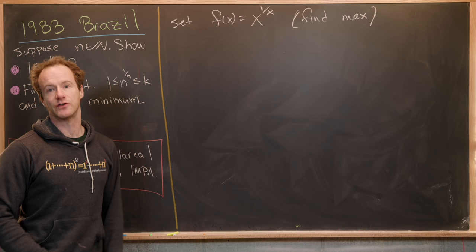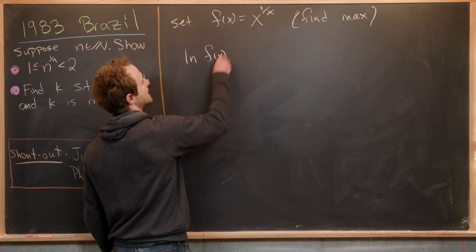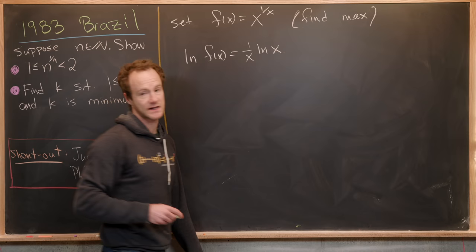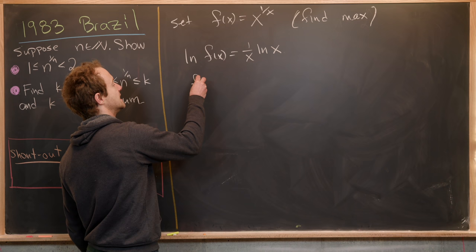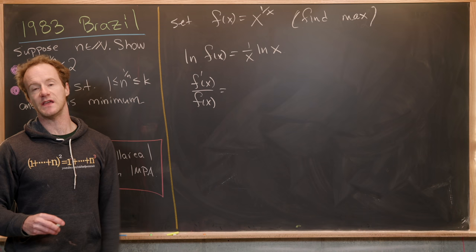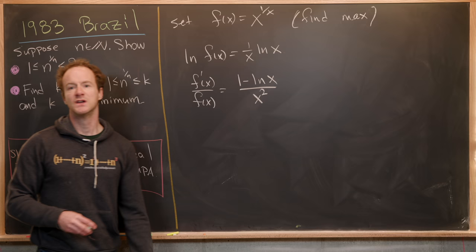Since we've got variables in both the base and the exponent, we want to use logarithmic differentiation. Taking the log of both sides gives us ln(f(x)) = (1/x)·ln(x). Now taking the derivative of both sides, the chain rule on the left gives us f'(x)/f(x), and the product rule on the right gives us (1 − ln x)/x².